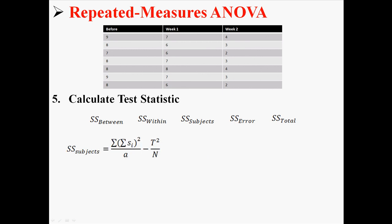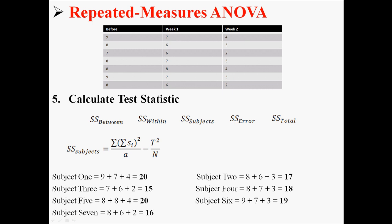Next we have sum of squares subjects, which uses both parts that we've already found so far. But we do have this a little bit different. Sorry, I made a mistake there. The first part is a little bit different. What we have to do is sum up the scores for each subject, then square them, then add them together. So that's what I'm showing you right now.